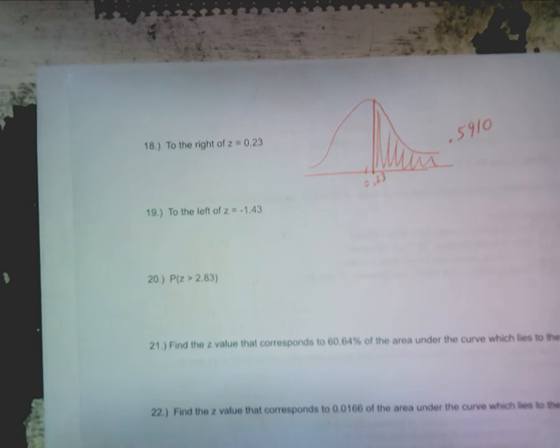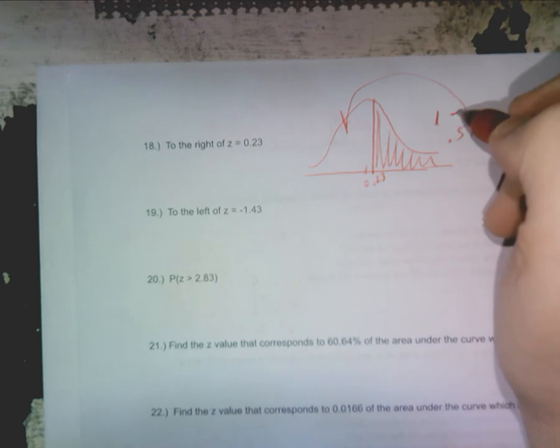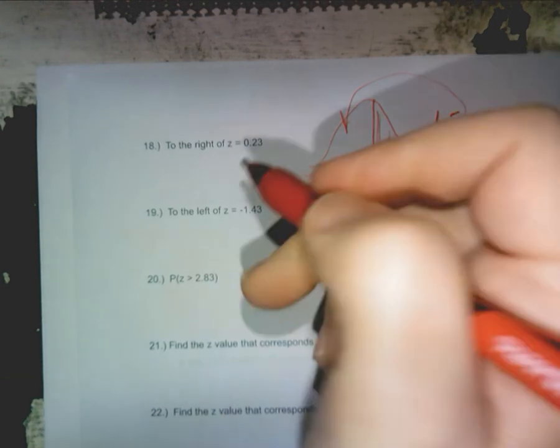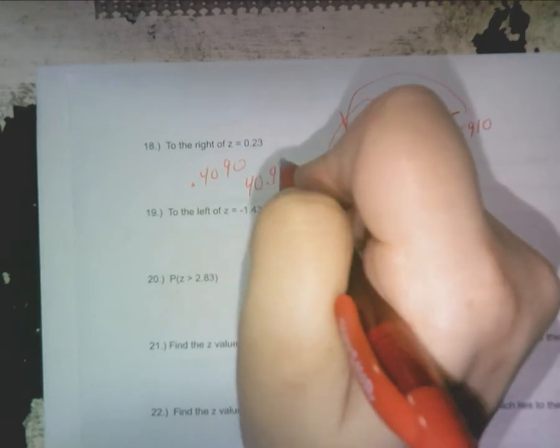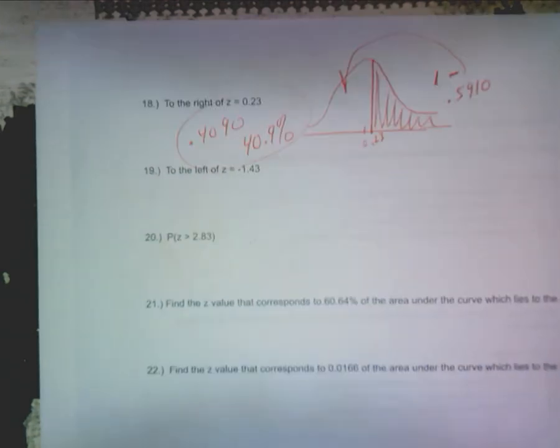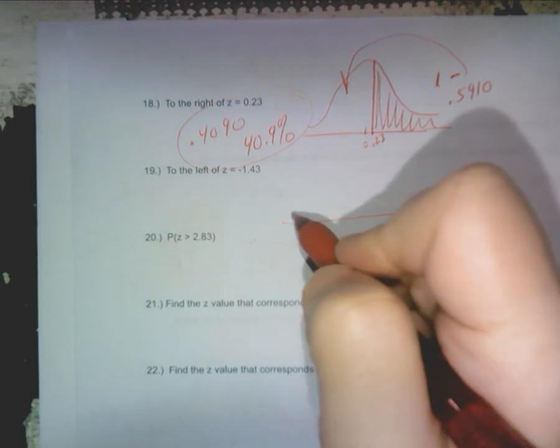Is that my answer? No. What do I do with that? Subtract by one because you're shading to the right. This is the area on that side, so you need to subtract from one, and your final answer should be 0.4090 or 40.9%, either way I'll accept.